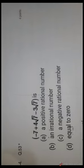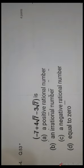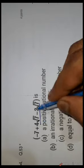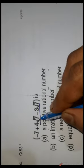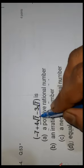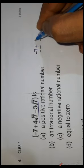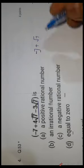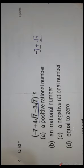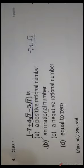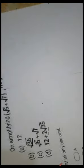Question number 53 is: minus 7 plus 4√7 minus 3√7. We can simplify this because both terms contain the same irrational factor √7. So minus 7 plus 4√7 minus 3√7 gives us minus 7 plus √7, which still contains an irrational factor. So this is an irrational number, and B is the correct answer.